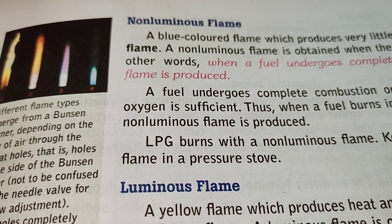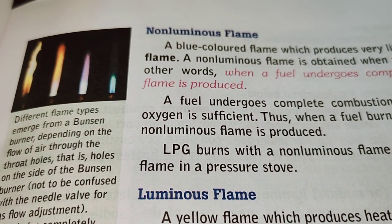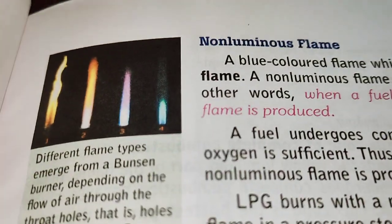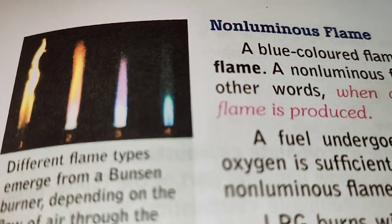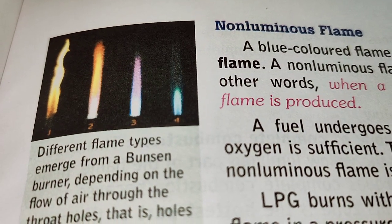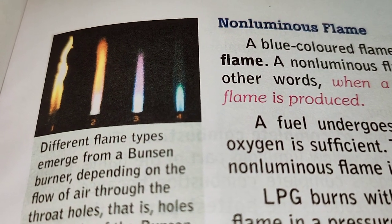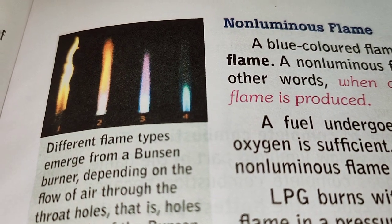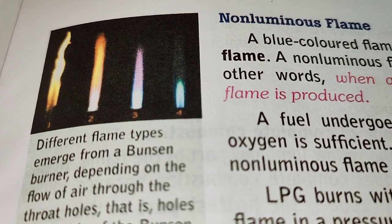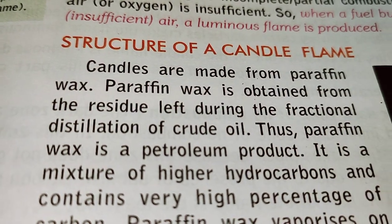A luminous flame is the yellow-colored flame, while a non-luminous flame is the blue-colored flame. A luminous zone produces more heat and light, whereas a non-luminous zone produces very little heat and light.